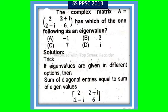Which of the following is an eigenvalue? The options are given. Solution: The trick is, if eigenvalues are given in different options, then sum of diagonal entries equals sum of eigenvalues.